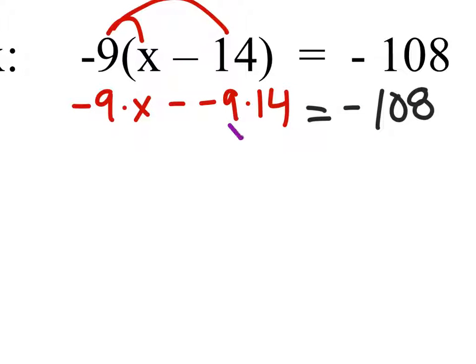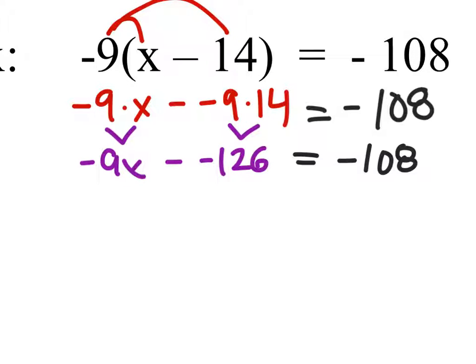And we're just going to multiply these. So we've got negative 9x minus negative 9 times 14. This is negative 126 and that equals negative 108.